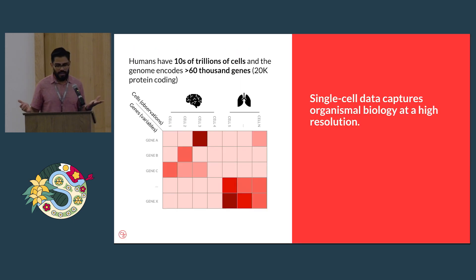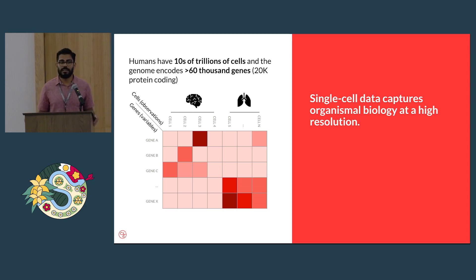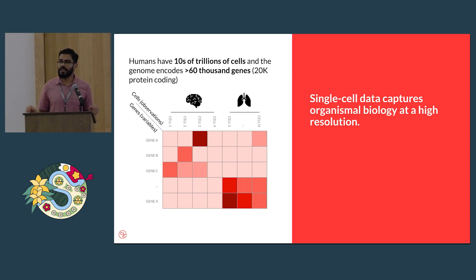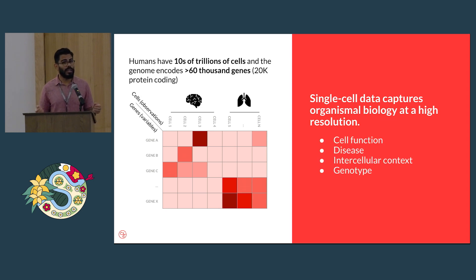Why single cell? Single cell captures the biology of an organism at very high resolution, and with technologies available now we can do this at very large scales. Humans have on the order of tens of trillions of cells, and the genome encodes more than 60,000 genes. With single cell RNA sequencing we can interrogate the expression of every gene in individual cells, giving us high-resolution gene expression profiles to decode cell function, disease, intercellular context, and donor genotype.